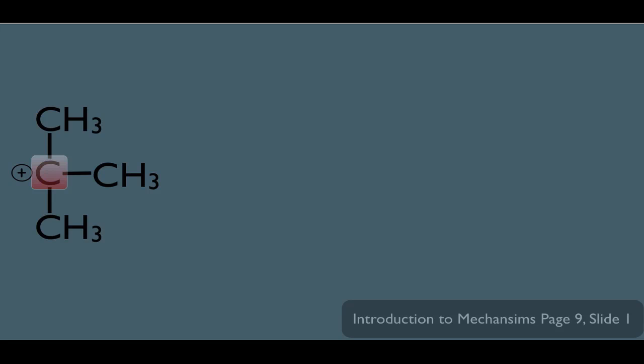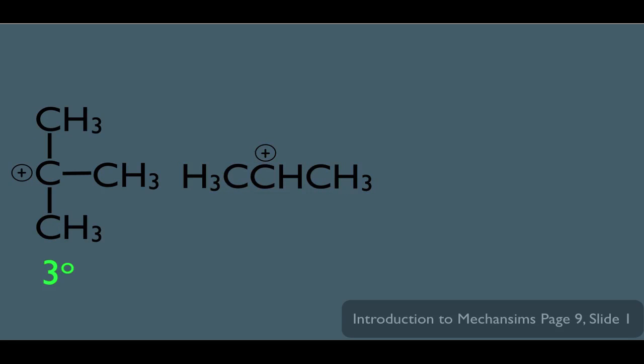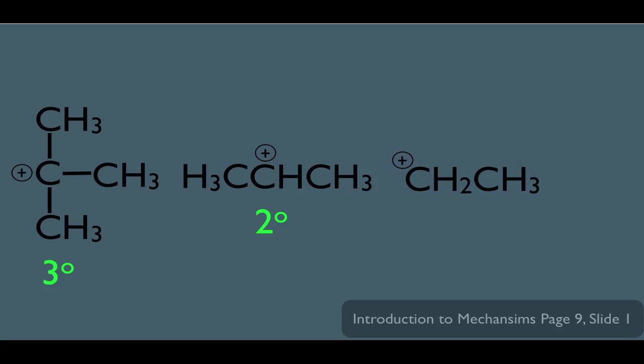For this carbocation right here, this is the carbon that bears the positive charge. That carbon happens to have three carbons directly bonded to it, so it is considered a tertiary carbocation. For this carbocation, the carbon bearing the positive charge has two carbons directly bonded to it, making it a secondary carbocation.